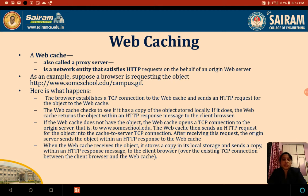The web cache checks to see if it has a copy of the object stored locally. If anybody has sent the same request in the past or in the history, then it will give the response by itself. If it doesn't have a record of the same question and answer, then it will pass the request through to the Google server. If it does have the object, the web cache returns it within an HTTP response message to the client browser.